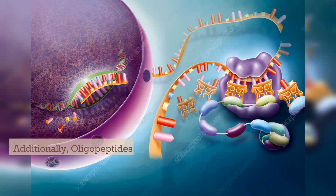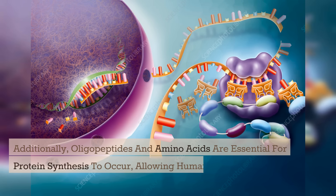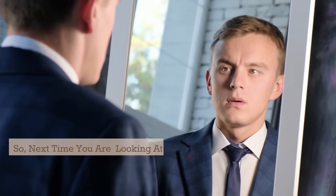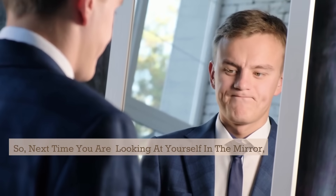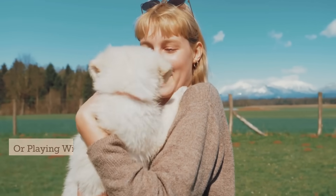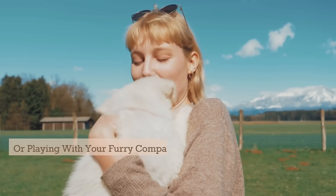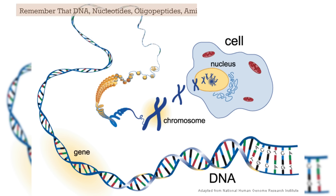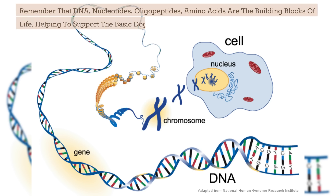Additionally, oligopeptides and amino acids are essential for protein synthesis to occur, allowing humans and even dogs or other animals to grow and function properly. So next time you're looking at yourself in the mirror or playing with your furry companion, remember that DNA, nucleotides, oligopeptides, and amino acids are the building blocks of life, helping to support the basic dogma of life that allows all living organisms to thrive and survive.